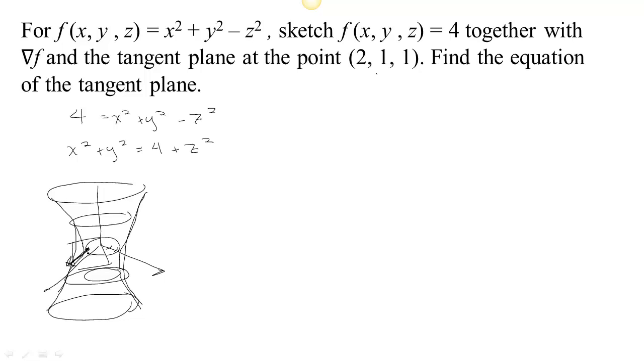Well, the gradient is going to show you the direction of steepest ascent. So that's going to be the fastest way to get off of this level set, which is going to be to go perpendicular to the level set. So the gradient will actually give us the normal to this plane. So let's go ahead and calculate the gradient.